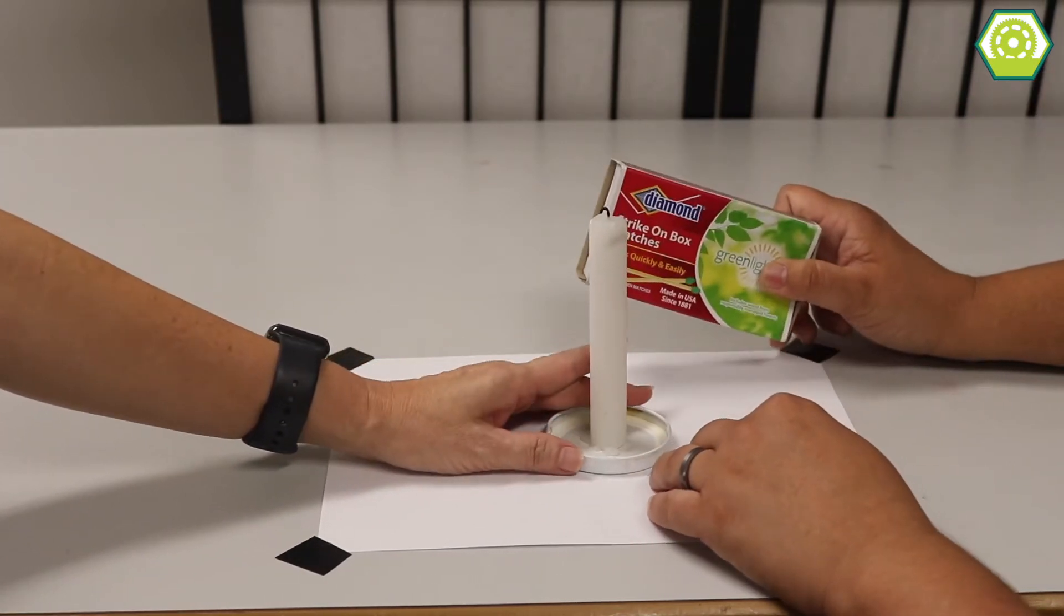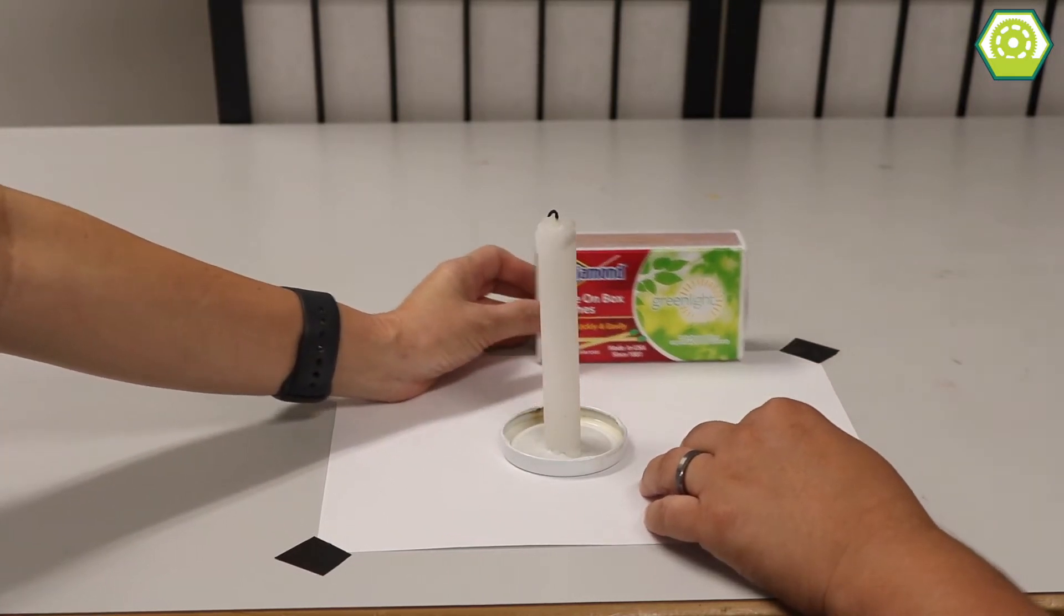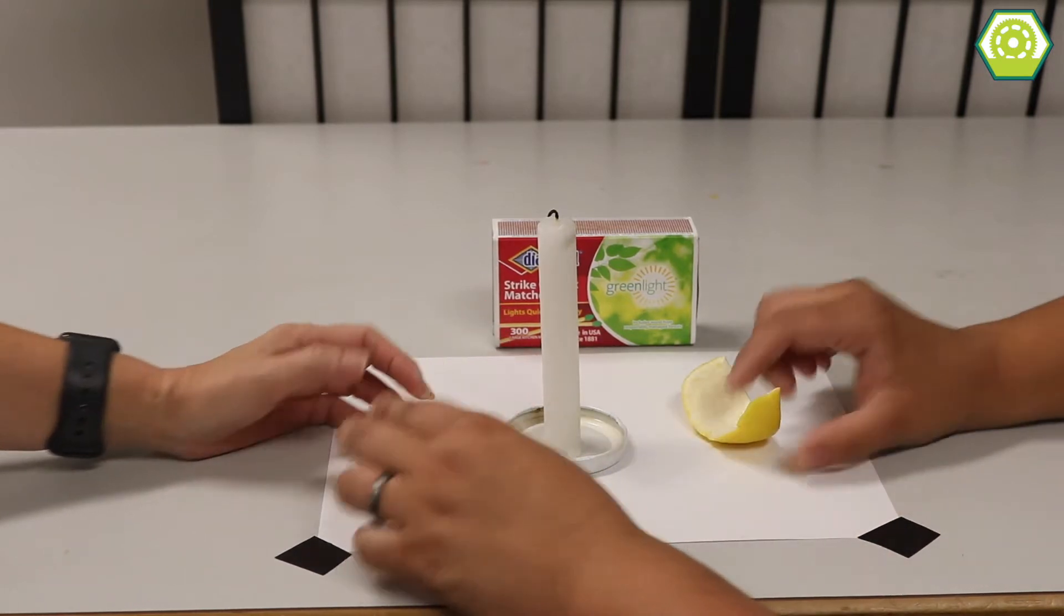If you do try this activity at home, please, please, please ask for permission and get adult supervision. And I've also got some lemon peel. So I'll give you one of those and I'll keep one of these.